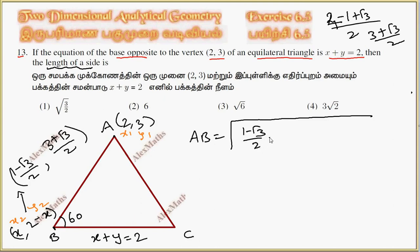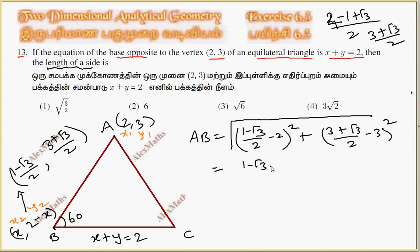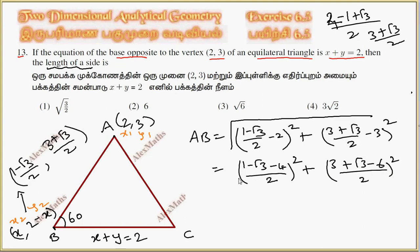So we compute: (2 minus 2) whole square plus (3 plus root 3 by 2 minus 3) whole square. This gives LC. So: (1 minus root 3 minus 4) by 2 whole square, plus (3 plus root 3 minus 6) by 2 whole square.